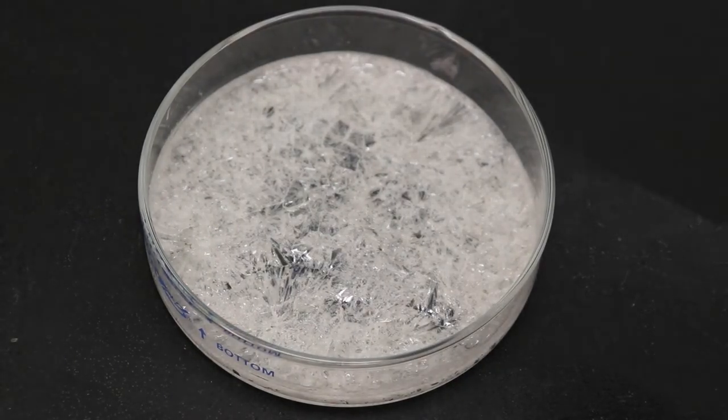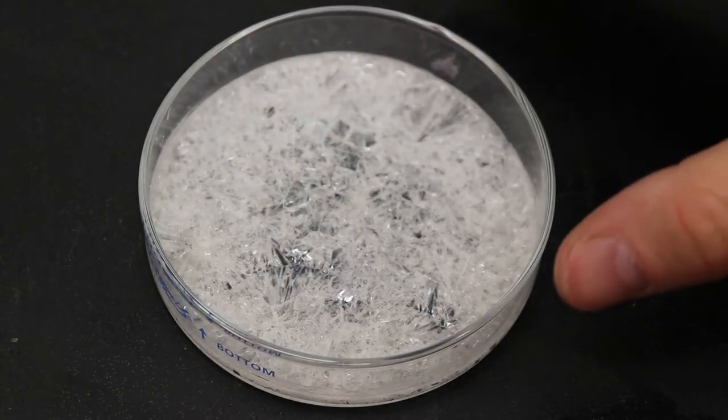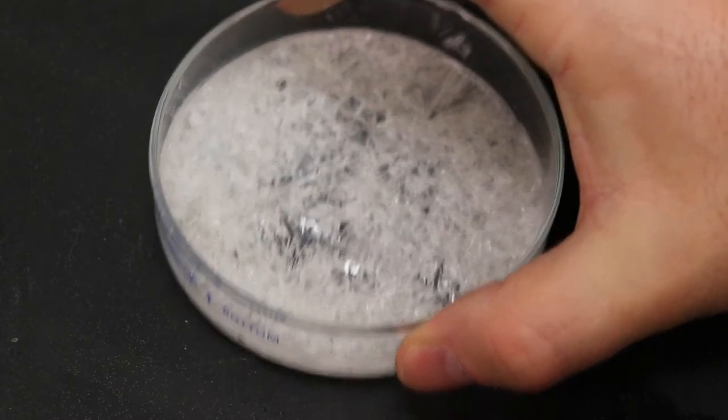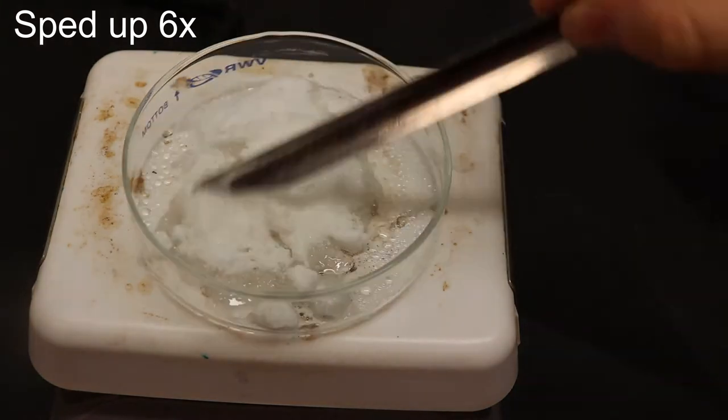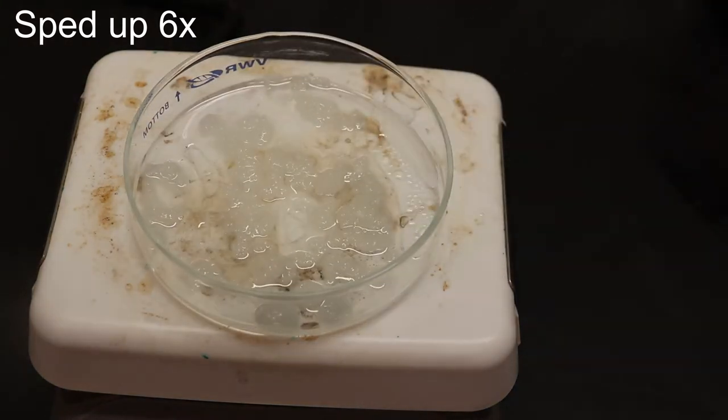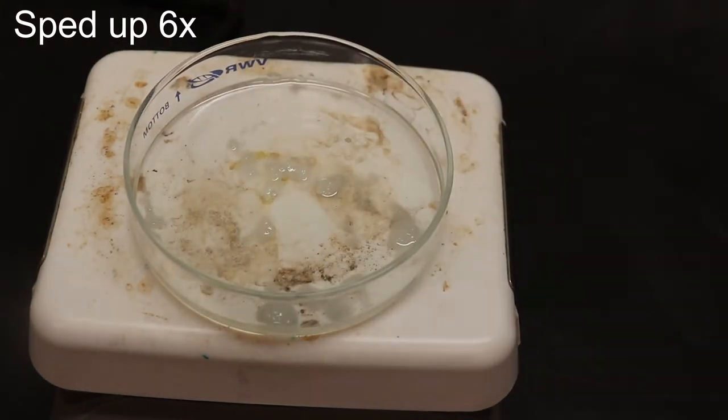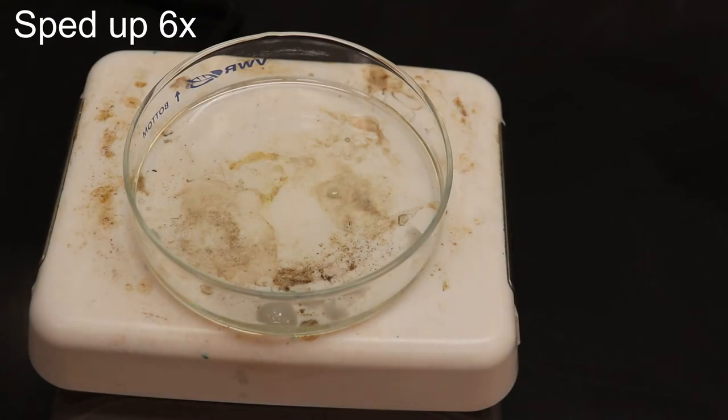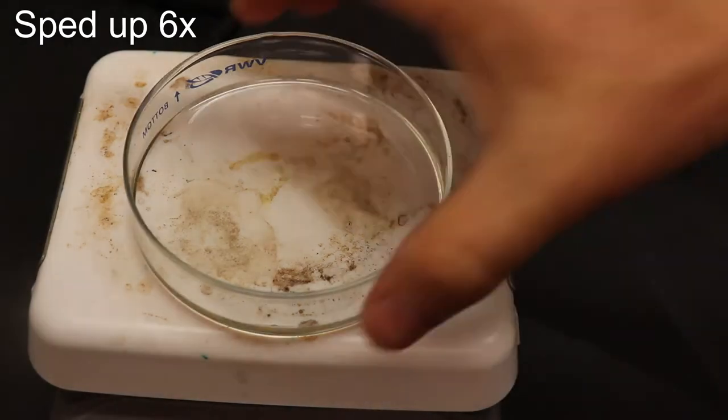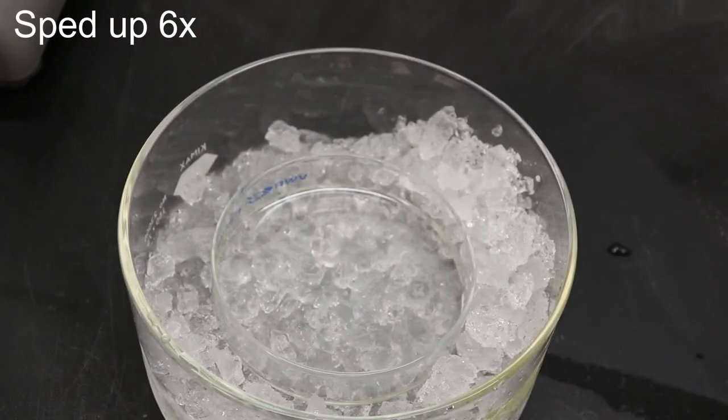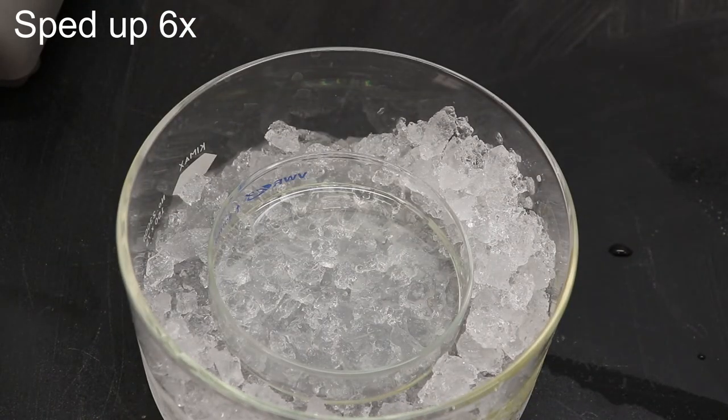All right, so it's almost completely done crystallizing now. I'm going to set this aside and start on the next one. And we're back up to six times speed again. This time it melted much more quickly because the plate and the petri dish were already hot. And then we'll stick it back in the ice bath.